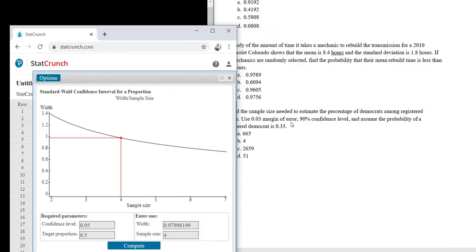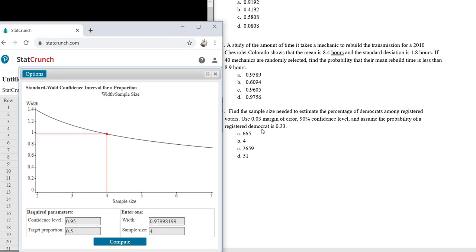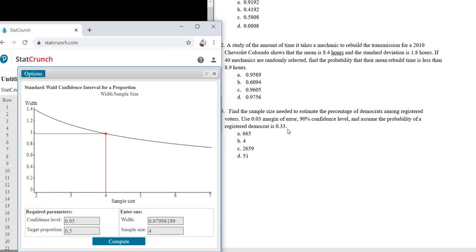So you only change it if they give you some information. Because if you don't know that the probability of a Democrat is 0.33, you really can't make an assumption other than there's a 50-50 chance that someone is a Democrat. And that's why you put 0.5 as the default. Because if you don't know any information, you just have to assume it's 50-50. But since they give us information, we change it.